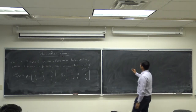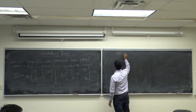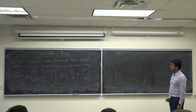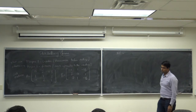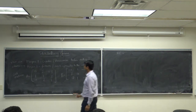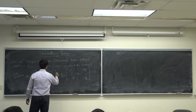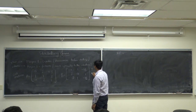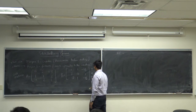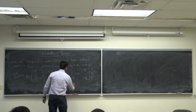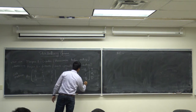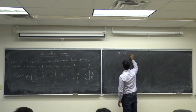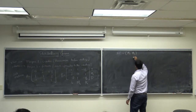The first question is: what is the Nash equilibrium in this game? The strategies are Top, Middle, Down for player one and Left, Middle, Right for player two. I claim that (M1, M2) is a Nash equilibrium.